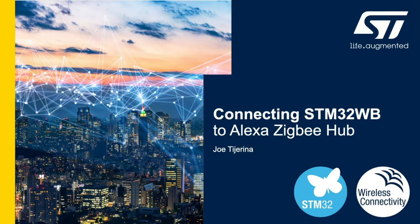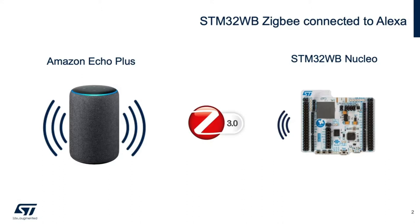Hello, my name is Joe Tiarina, applications engineer for STMicroelectronics. In this video, I'm going to demonstrate just how simple it is to get your STM32WB Zigbee device connected to a commercial Zigbee hub like the Amazon Echo Plus, which many people already have in their homes. The Amazon Echo Plus has an integrated Zigbee hub and acts as a Zigbee coordinator, and it can allow other Zigbee routers or end nodes to join its network. Then you can use the Alexa user interface to control your device.